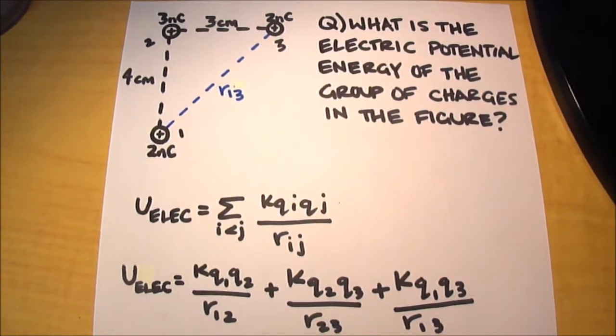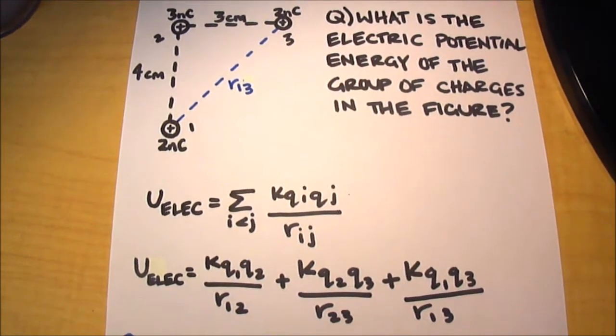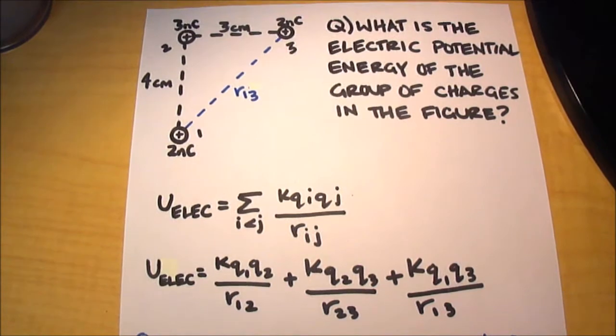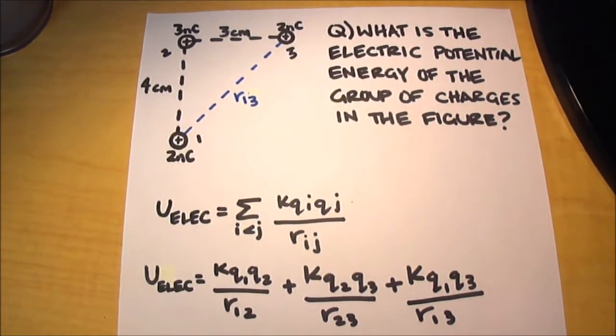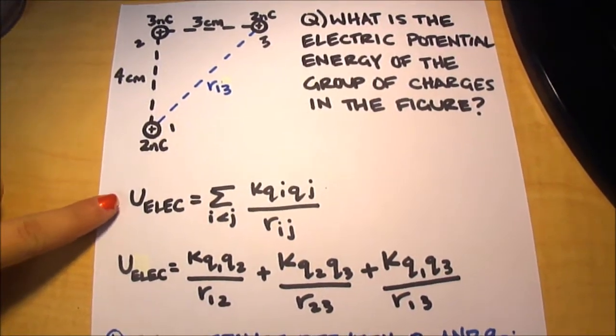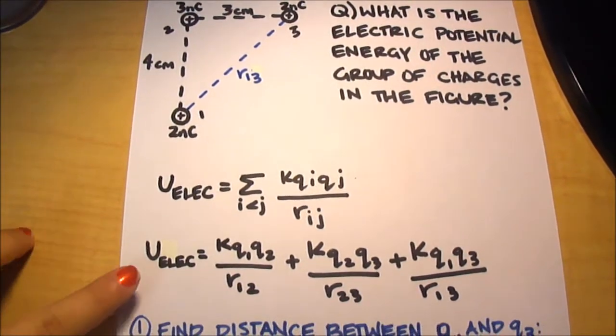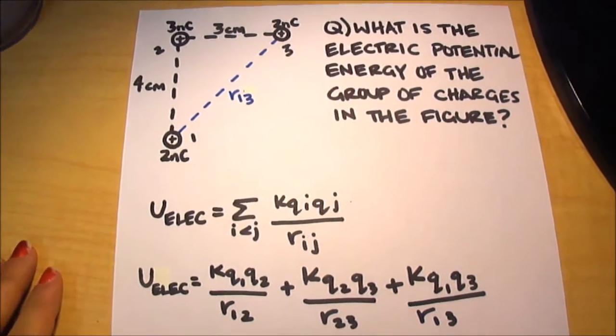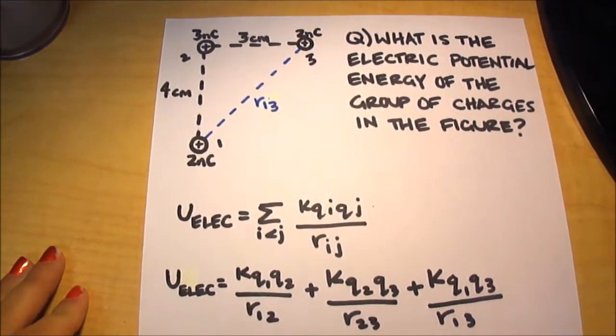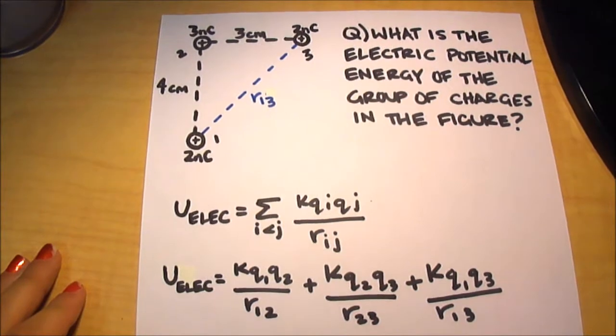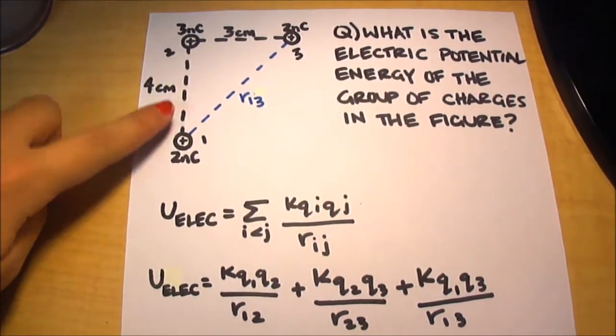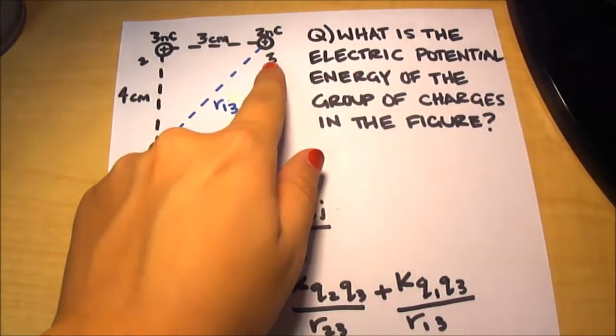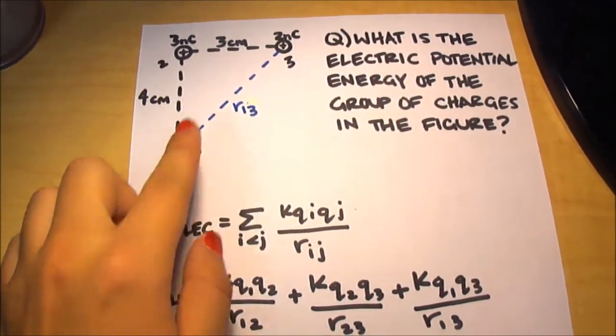Now it's important to know that the potential energy of multiple charges, which is the case in this question, is just the sum of the potential energies due to all pairs of charges. This thought can be represented by this equation here, which can be a little overwhelming, so it's rewritten here in a form that's easier to understand. It basically just means that the overall potential energy is equal to the potential energy between these two, plus the potential energy between these two, plus the potential energy between these two.